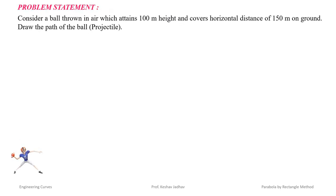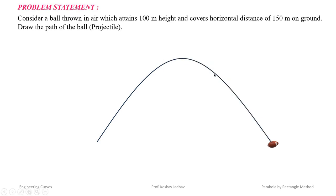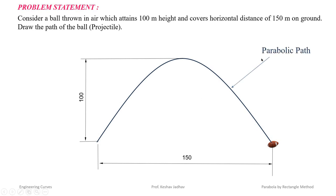Let us understand the given problem. The ball is thrown in air, attaining 100 meter height and covering a distance of 150 meter on the ground. The ball follows a path whose shape is parabolic in nature, so basically we have to draw a parabola. The height is given as 100 meter and horizontal distance is 150 meter. If height and width are given, then by using rectangle method we can draw the parabola.